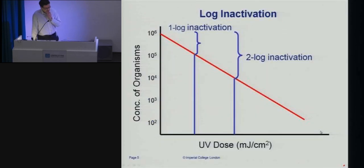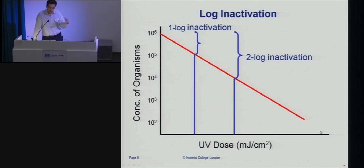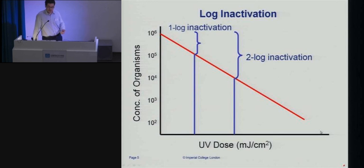Log inactivation is essentially the number of nines in the percent reduction of the organism. So if you get 90% reduction, that's one log. 99% is two log. 99.9% is three log, and so on.